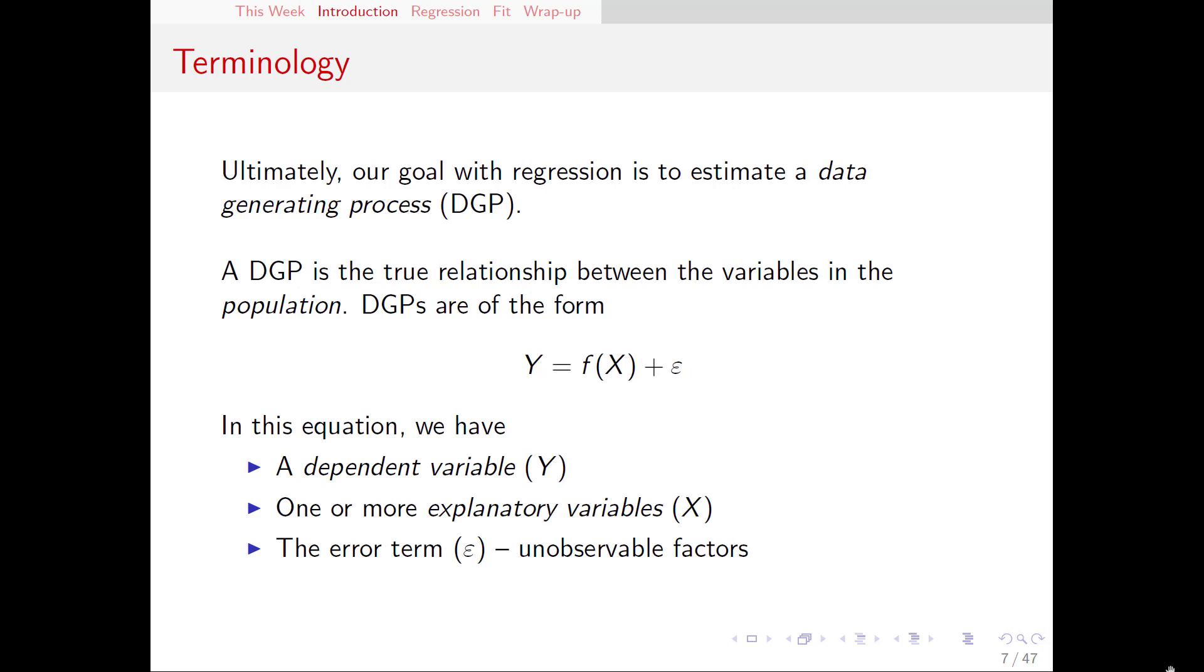Mathematically, the goal of running a regression is to estimate what we call a data generating process or a DGP. When we think about the relationship between our outcome variable, which we typically call y, and the rest of our variables that we call x, there is some true relationship between these variables out there. A relationship that we will never know for sure, and that's what our DGP is.